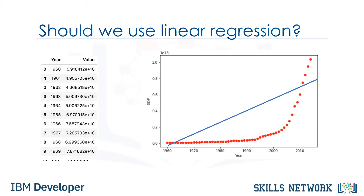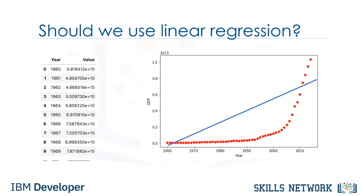Indeed, if the data shows a curvy trend, then linear regression will not produce very accurate results when compared to a non-linear regression, simply because linear regression presumes that the data is linear. The scatter plot shows that there seems to be a strong relationship between GDP and time, but the relationship is not linear. As you can see, the growth starts off slowly, then from 2005 onward, the growth is very significant, and finally it decelerates slightly in the 2010s.